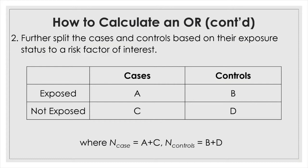The table shown here is what's called a two-by-two contingency table. The columns represent the disease status of the study sample, and the rows represent the exposure status. A represents the number of cases exposed to a certain risk factor, B represents the healthy controls exposed to the same risk factor, C represents the cases not exposed, and D is the number of healthy controls not exposed.